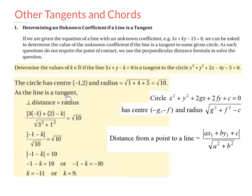As the line is a tangent, the perpendicular distance is therefore equal to the radius. We're going to use the perpendicular distance formula, which is the distance from a point to a line, which is the modulus of ax1 plus by1 plus c, all divided by the square root of a squared plus b squared. We get the ABC from our line. Our a is 3, our b is 1, and our c is minus k.